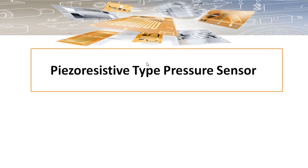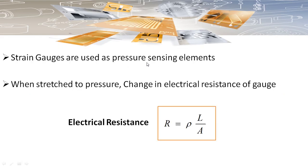In this video, I'm going to discuss the piezoresistive type pressure sensor. The sensor works on the principle of the piezoresistive effect. Strain gauges are used as the pressure sensing elements in these sensors. When the strain occurs due to the application of pressure, a change in electrical resistance occurs, and this change is measured by using suitable electronic circuitry which gives a direct indication of the pressure.